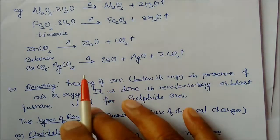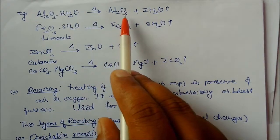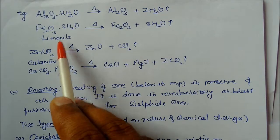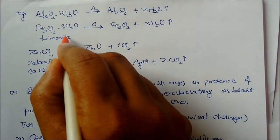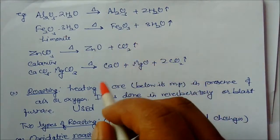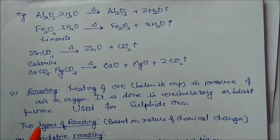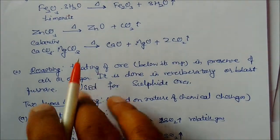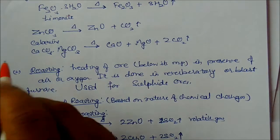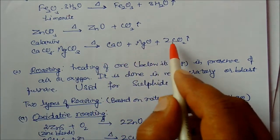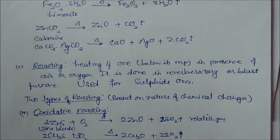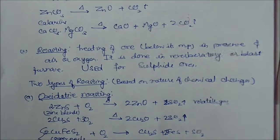Examples of calcination: aluminium hydroxide (hydrated oxide) is heated to give Al2O3 plus water. Limonite (iron ore) gives Fe2O3. Zinc carbonate gives zinc oxide plus CO2. Dolomite gives calcium oxide. All volatile impurities are removed in this process. Calcination is used for hydrated oxide ores or carbonate ores, converting them into oxide ores.